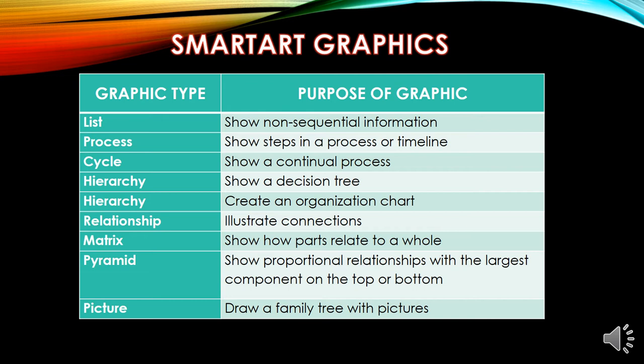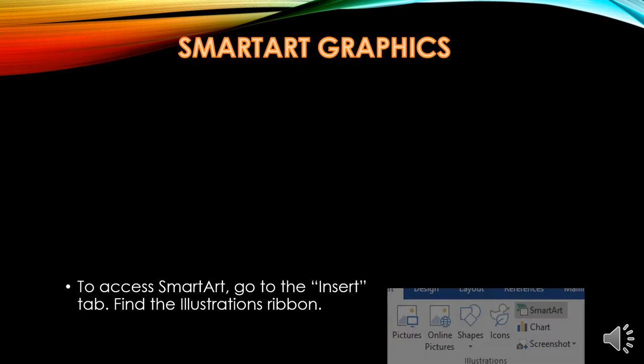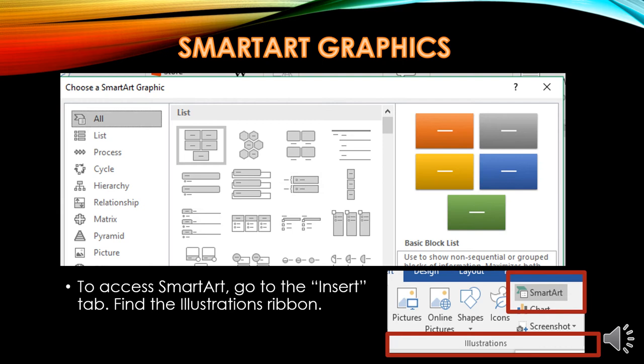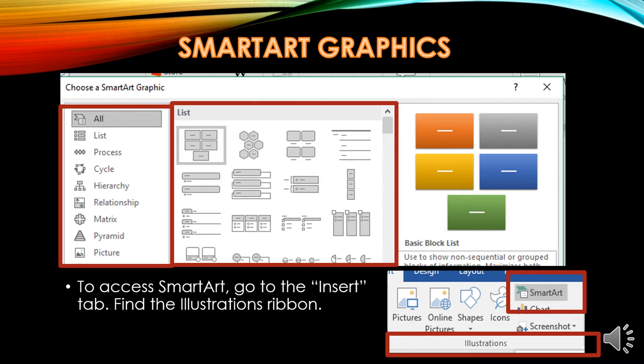There are a variety of different types of SmartArt: list, process, style, cycle, hierarchy, relationships, matrix, pyramids, and pictures. To access SmartArt, go to the Insert tab and find the Illustration ribbon. You will see a listing of all the different types. Select the one you want to use, such as Process, and then choose from the different options available for that SmartArt type.